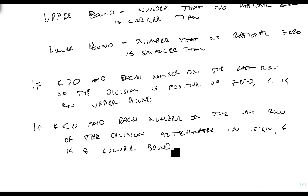If k is less than zero and each number on the last row of the division alternates in sign, then k is a lower bound. So there's an important thing to recognize here: an upper bound can only be positive and a lower bound can only be negative. You don't need to look for upper bounds in the lower numbers or lower bounds in the positive numbers. Here's how it works in practice.